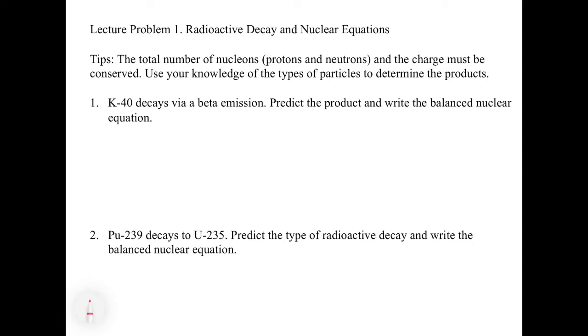If we have potassium-40, you'll notice that we don't give the atomic number here. So the first thing you've got to do is write down potassium. We know the molecular weight is 40. You've got to go to the periodic table and look up what its atomic number is, and that's 19.